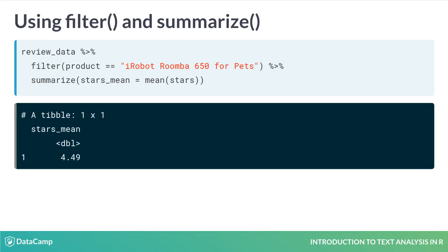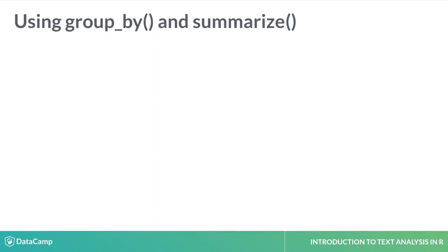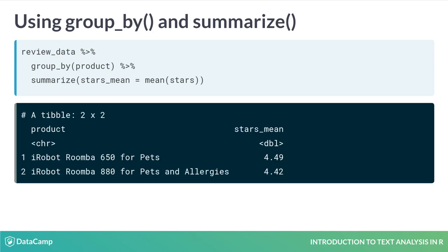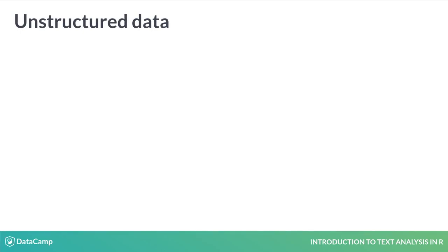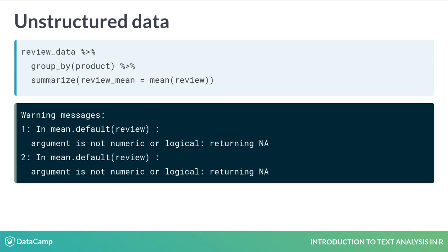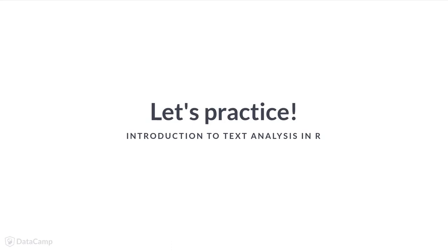This creates a new data frame composed of a single row and column with the average star rating for the 650 Roomba model. We could repeat this process to compute the average star rating for other products, or we can use the group_by function in place of filter. Here we use group_by to specify which column defines the groups and pipe this into summarize. The average star rating for the two products is nearly identical. We might naively try to similarly summarize the review column with a mean and get an error. Text is data like the star rating, but it's currently unstructured. We'll need to add structure before we can analyze it. These dplyr functions will be essential moving forward.